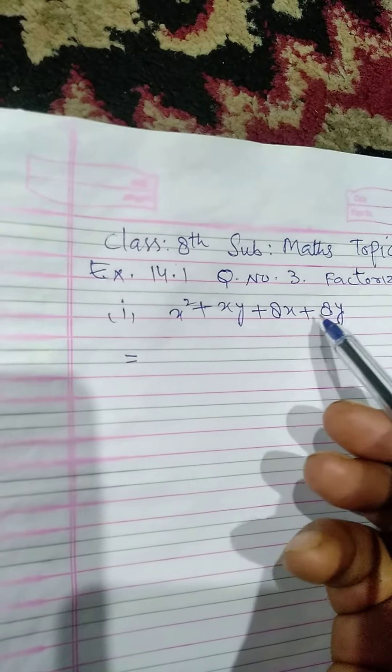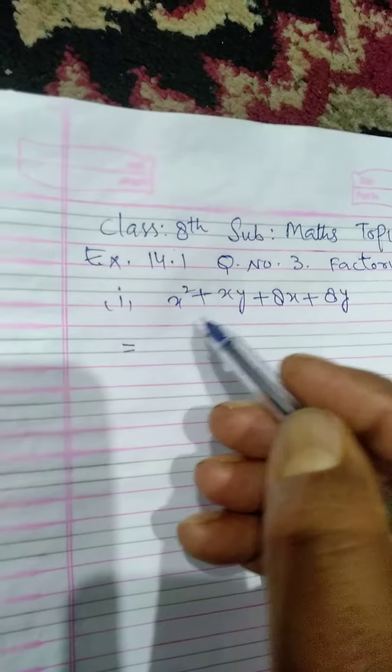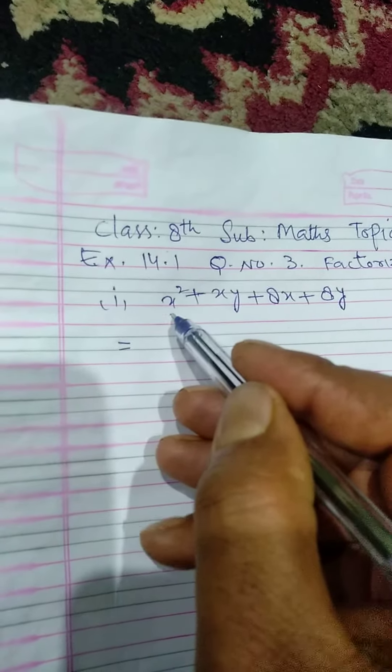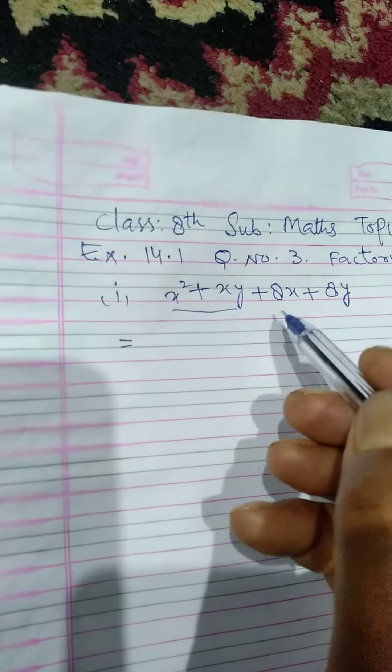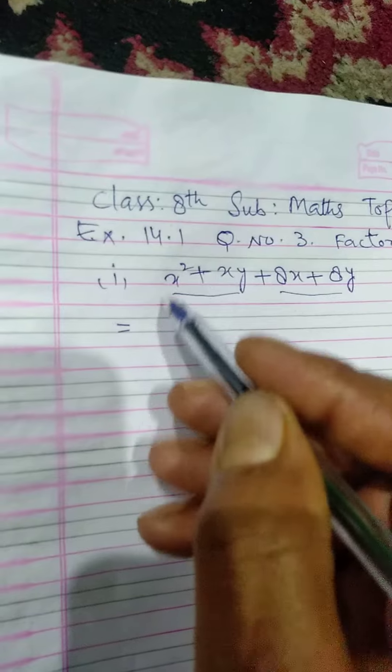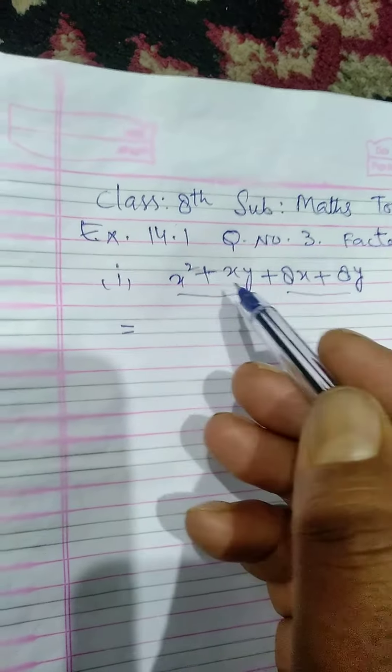In order to find our factorization, we first make the pairs like this. This is the first pair of terms and this is second pair of terms. Now x² + xy, we see x is common in both the terms.